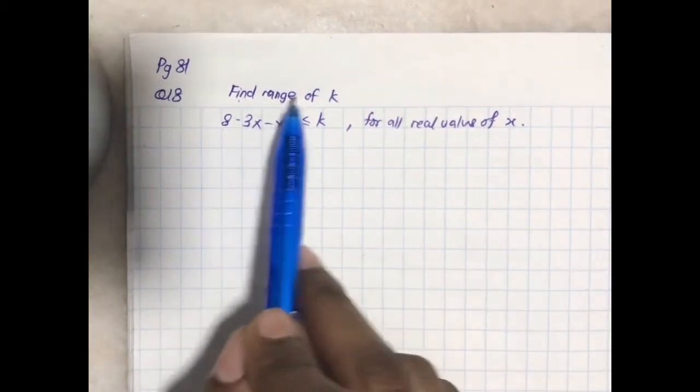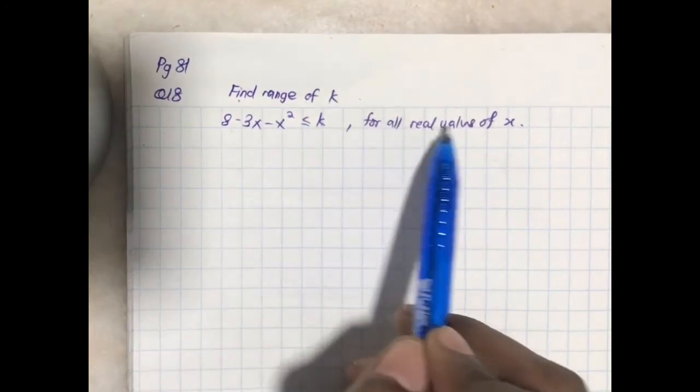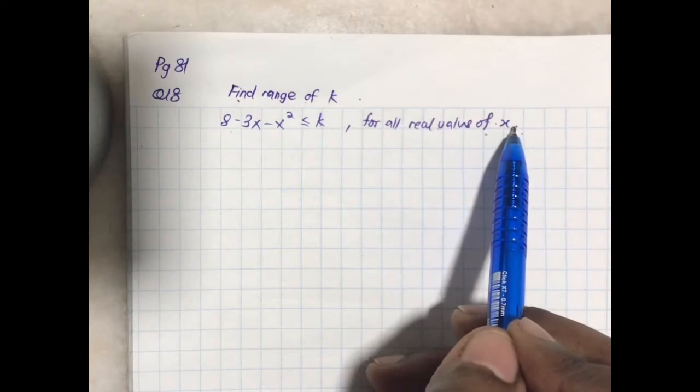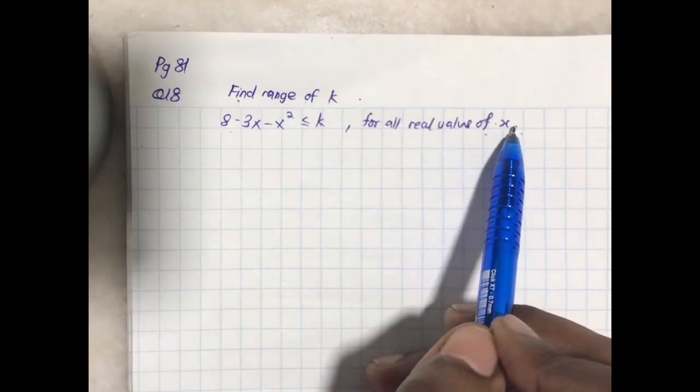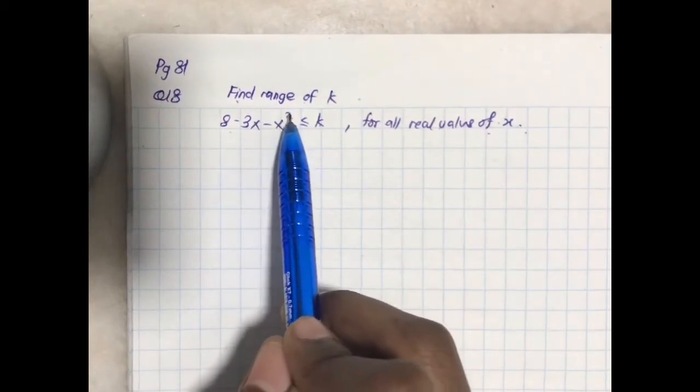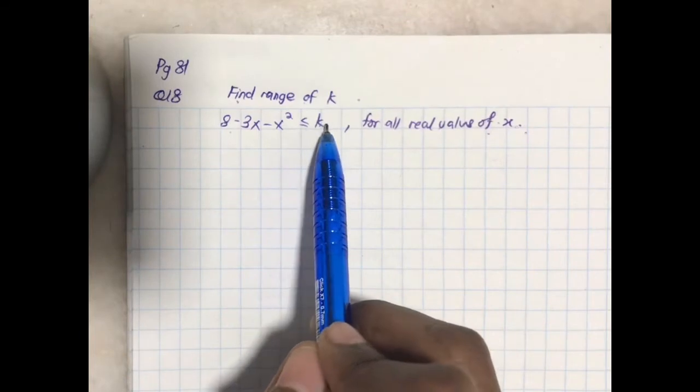Let's look at the question. The question is find range of k for $8-3x-x^2 \leq k$ for all real values of x. Real values of x means any sort of x value. As long as you can plot it on the x axis, then that becomes real values of x. No matter what x value you put here, you want this entire quadratic function to be lesser or equal to the k value.